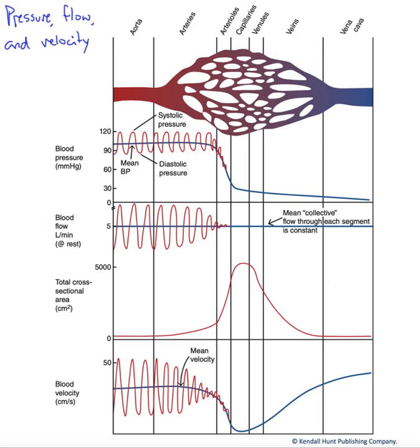In this series of stacked graphs, we want to look at the pressure, flow, and velocity of blood as it traverses the systemic circuit. At the top here, we have an anatomical representation of that circuit, of that pathway of blood through that cardiovascular circuit. We would start in the aorta, a single vessel. We would move into branching and numerous arteries.